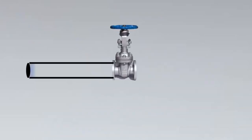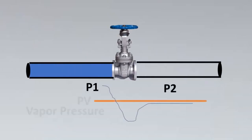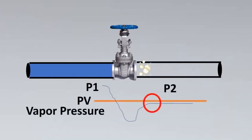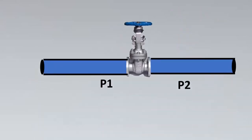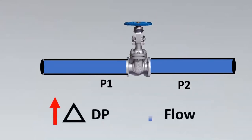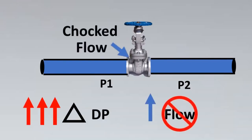The next case is when there is flow to the valve but the pressure downstream does not recover. This happens when the pressure downstream is still below the vapor pressure curve. This phenomenon makes the liquid stay in the vapor pressure phase downstream, and this phenomenon is called flashing. Now, as we increase DP there is an increase in flow, but if we keep increasing DP, at a certain point flow will not increase anymore. This point is called choked flow.